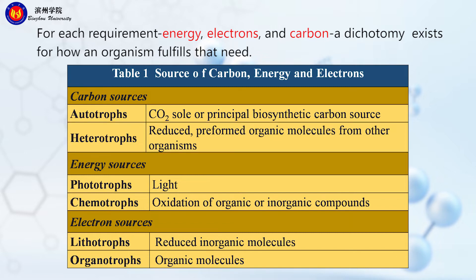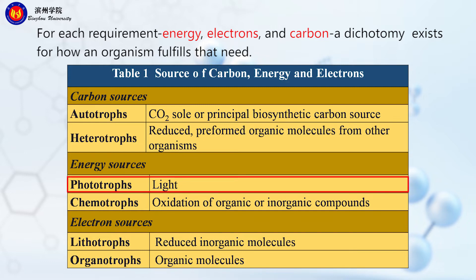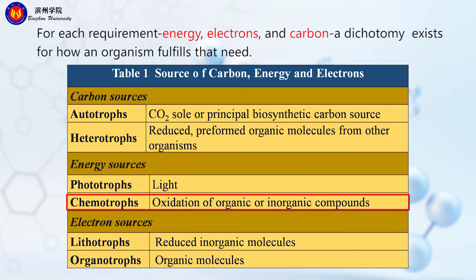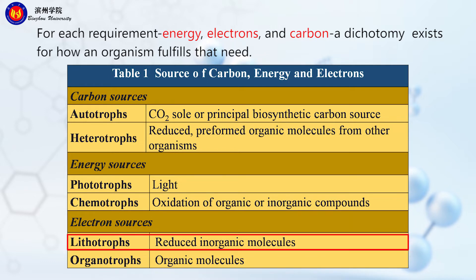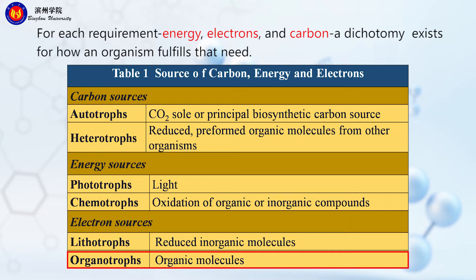According to the energy source, there are also two types. The first is phototrophs — these microbes use light as their energy source. And there are chemotrophs — these microbes use oxidation of organic or inorganic compounds as their energy source. For electron sources, we also have two types. First, lithotrophs — these microbes use reduced inorganic molecules as their electron sources. And organotrophs use organic molecules as their electron sources.